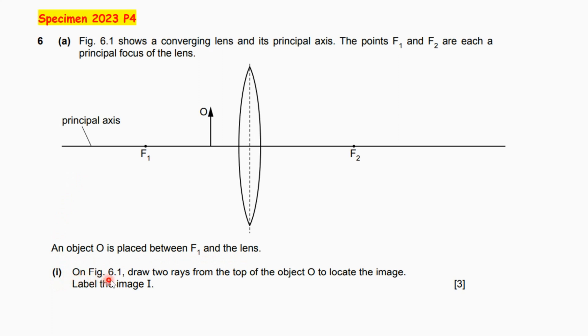In section i, on figure 6.1, draw two rays from the top of the object O to locate the image and label the image I. Here the O is placed between the F1, which is the principal focus, and the center of the lens.